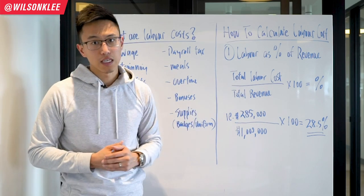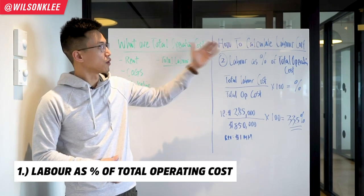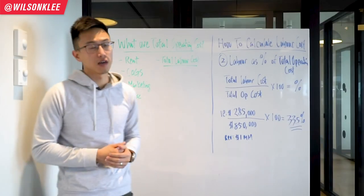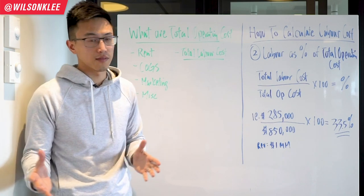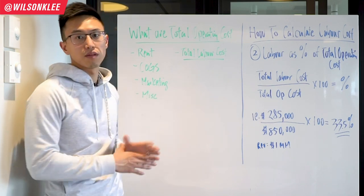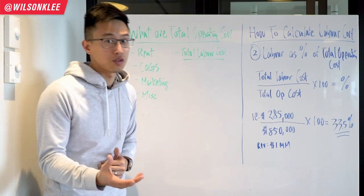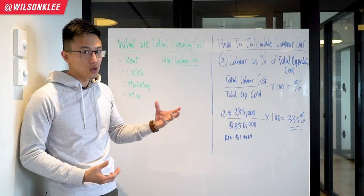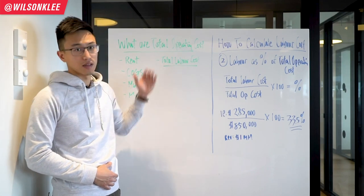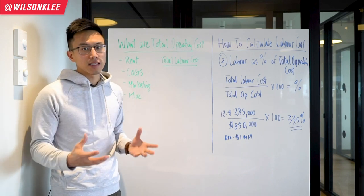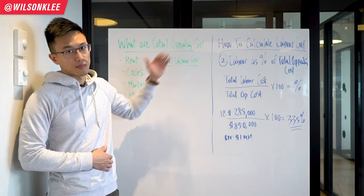The second way of calculating labor costs is as a function of total operating costs. What is total operating costs? They include the rent, the cost of goods sold — which is basically all the ingredients and food costs — your marketing costs, and all the miscellaneous costs to operate your restaurant. Something important to know is that labor costs should be included in the total operating costs. This is a mistake that a lot of people make — they don't include the labor cost. It is basically what it takes to operate your business, and it should all be included into the total operating costs.